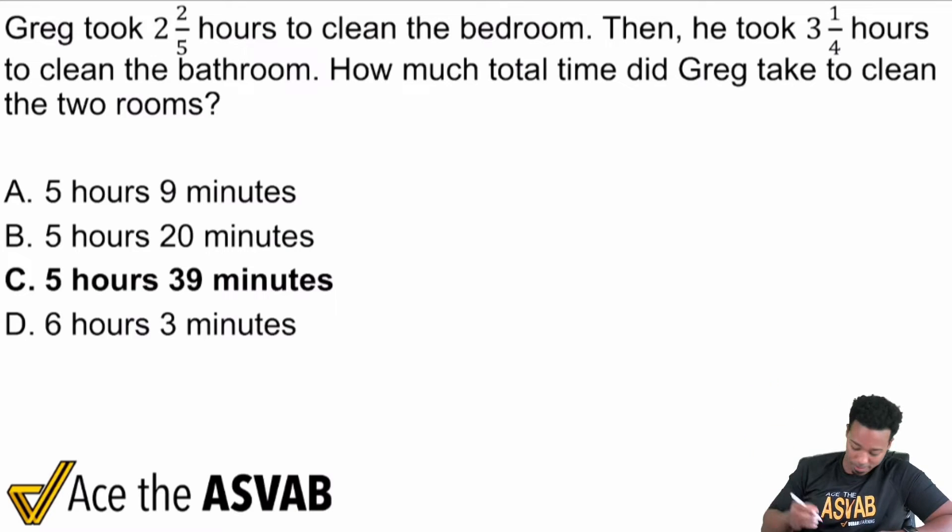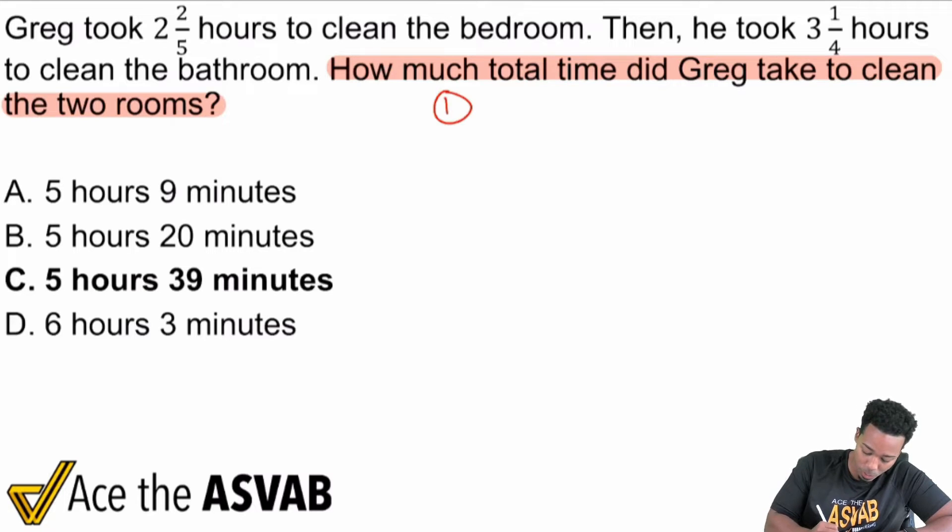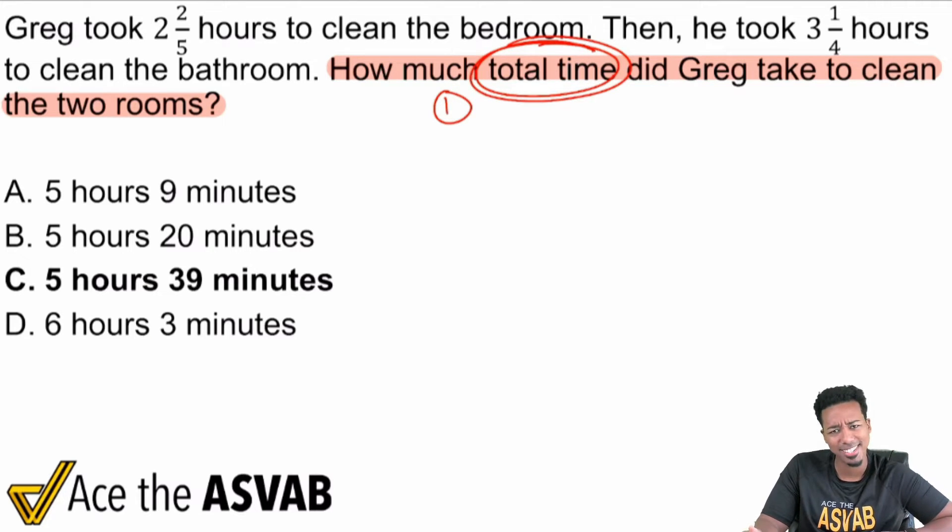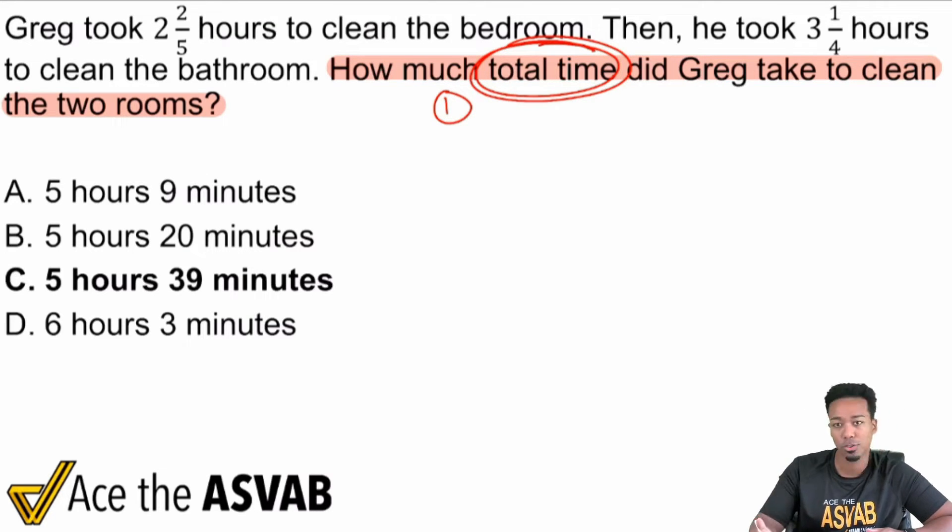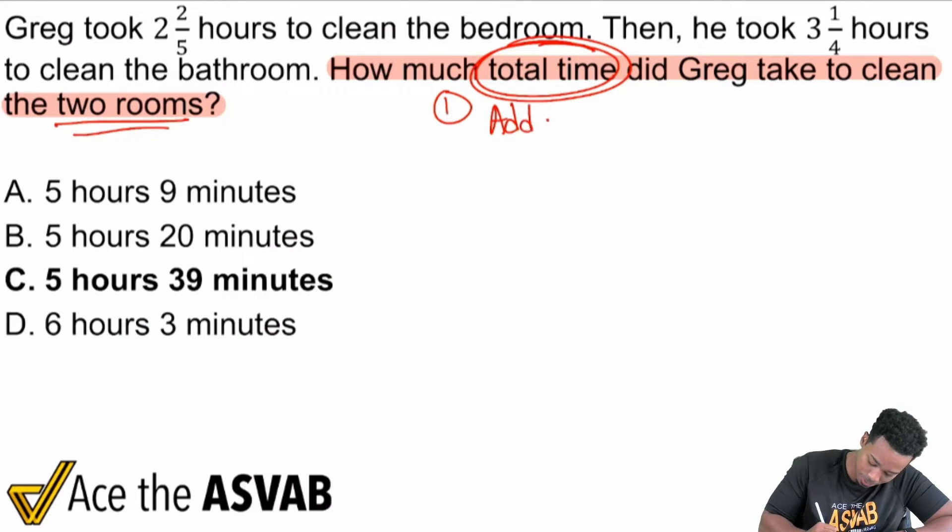So remember first step, read that question, which is going to be right here. How much total time did Greg take to clean the two rooms? Remember, starting with the question allows us to understand what the bullseye is, what that goal is. So how much total time? Look at that right there. Total time. Ain't that a key phrase? It is because total means add everything up and then we have time and then cleaning the two rooms. So total time. So add up the time to clean the two rooms.